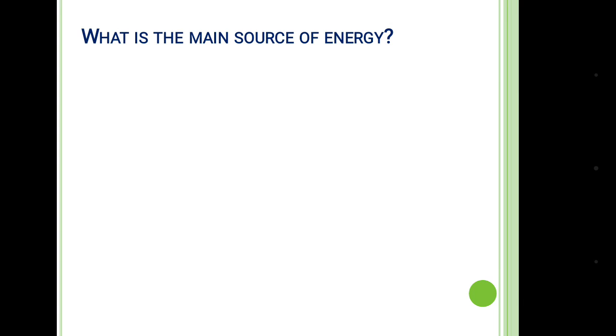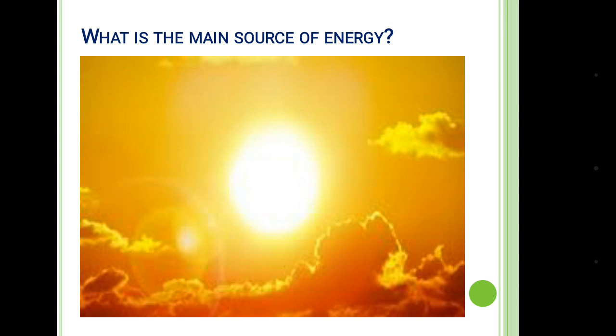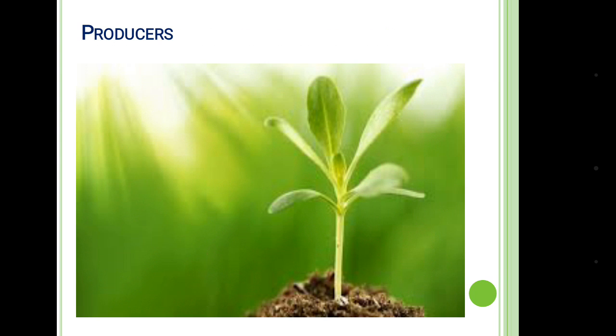So what is the main source of energy? Sun. Sun is the main source of all energy in our world. By utilizing the energy from the sun or light energy, the plants are producing their own food. Hence the plants are called the producers or autotrophic organisms.